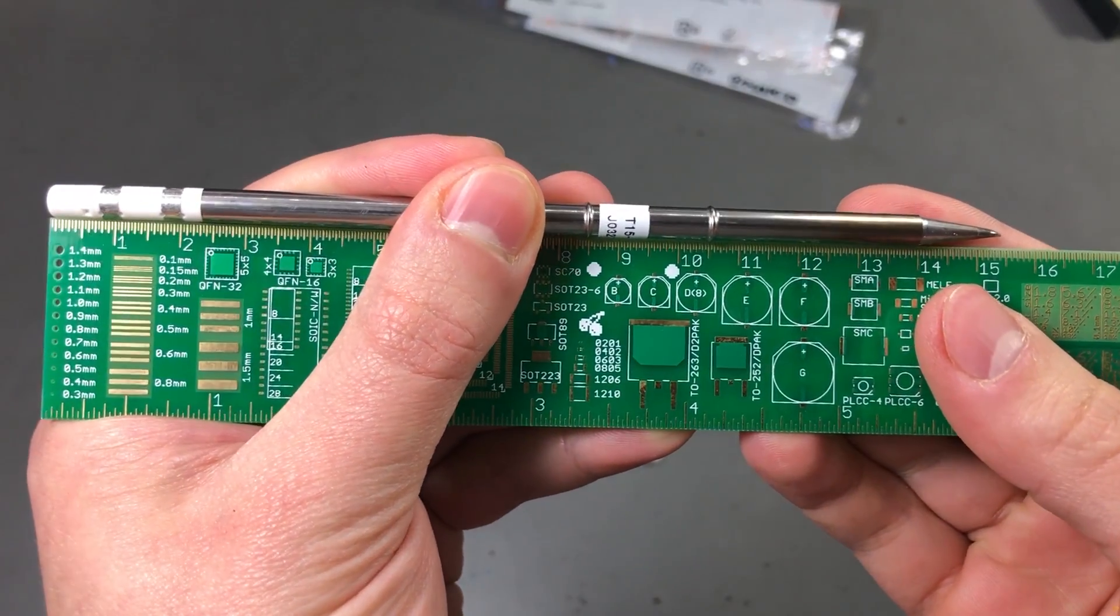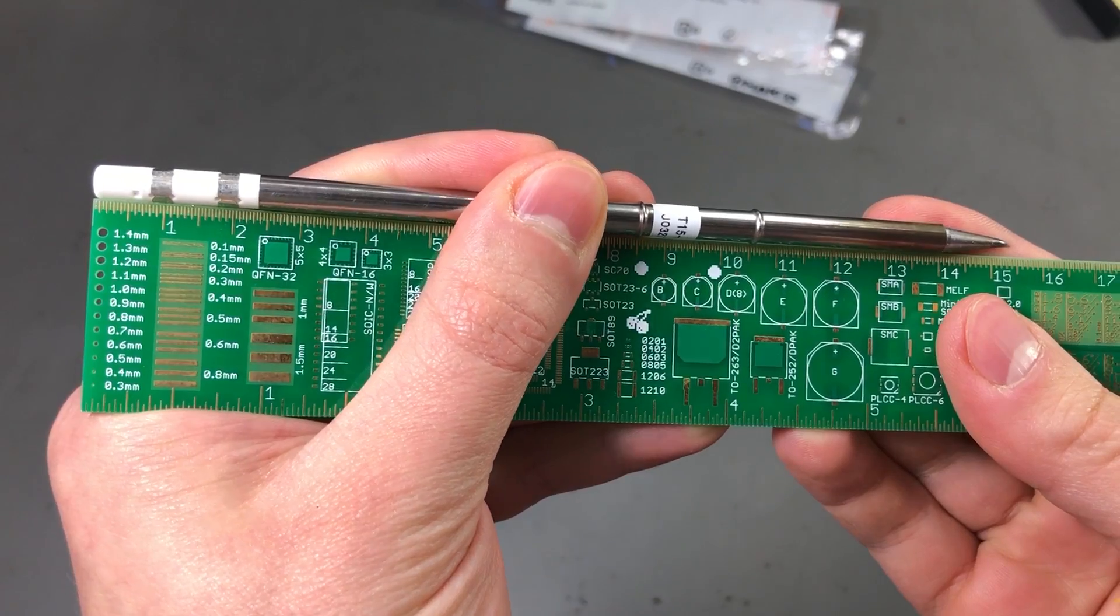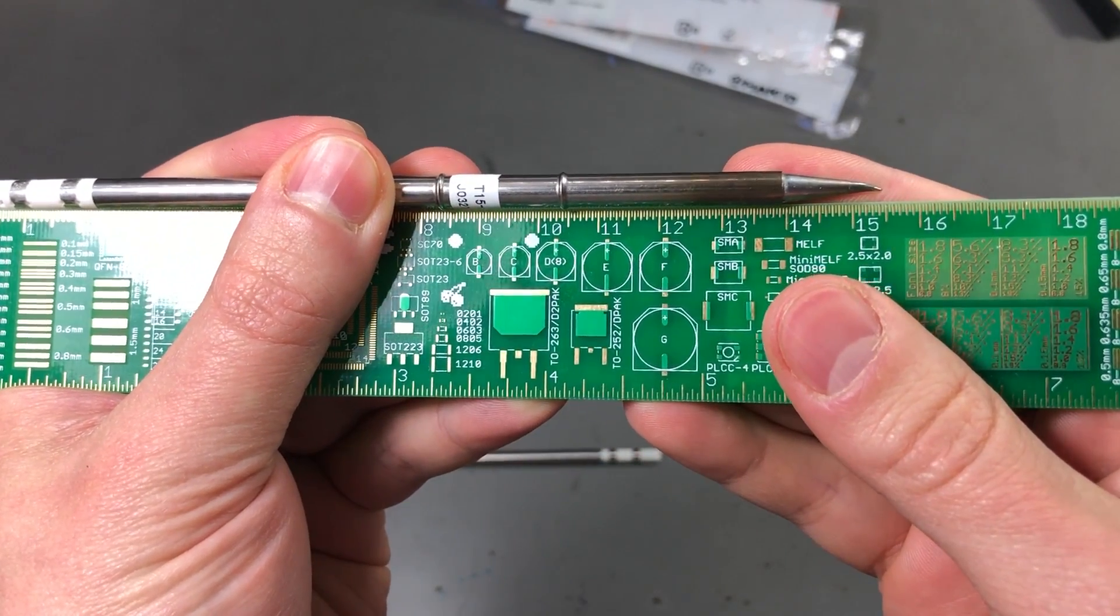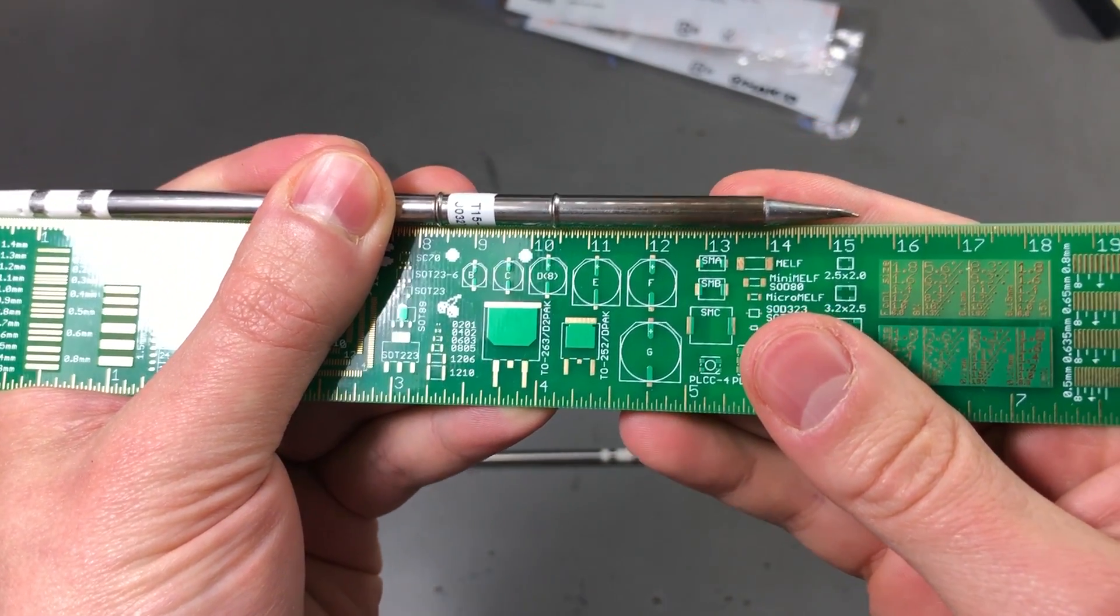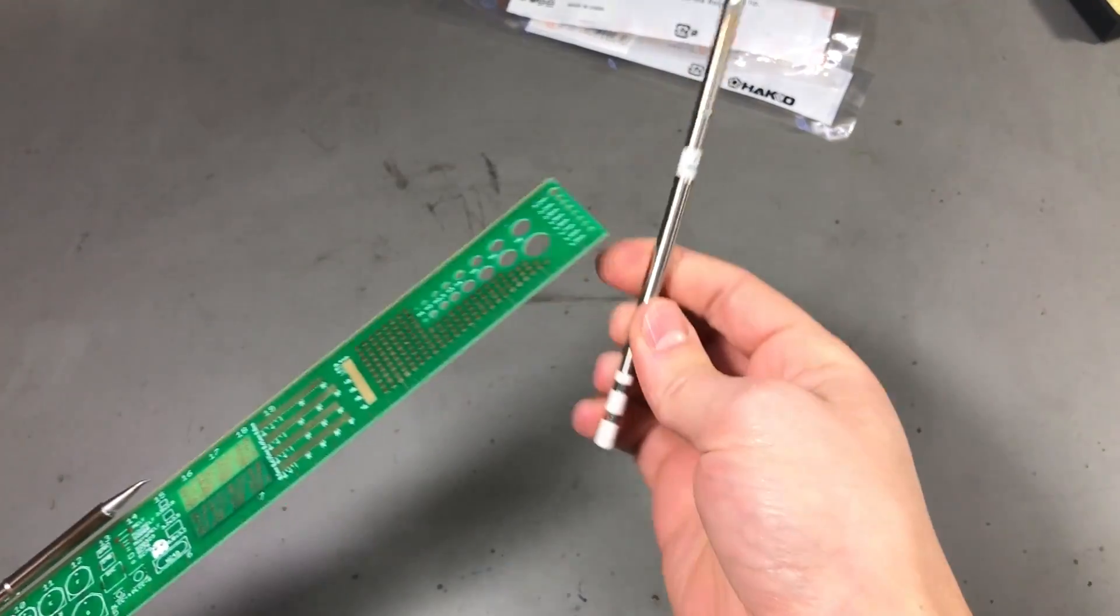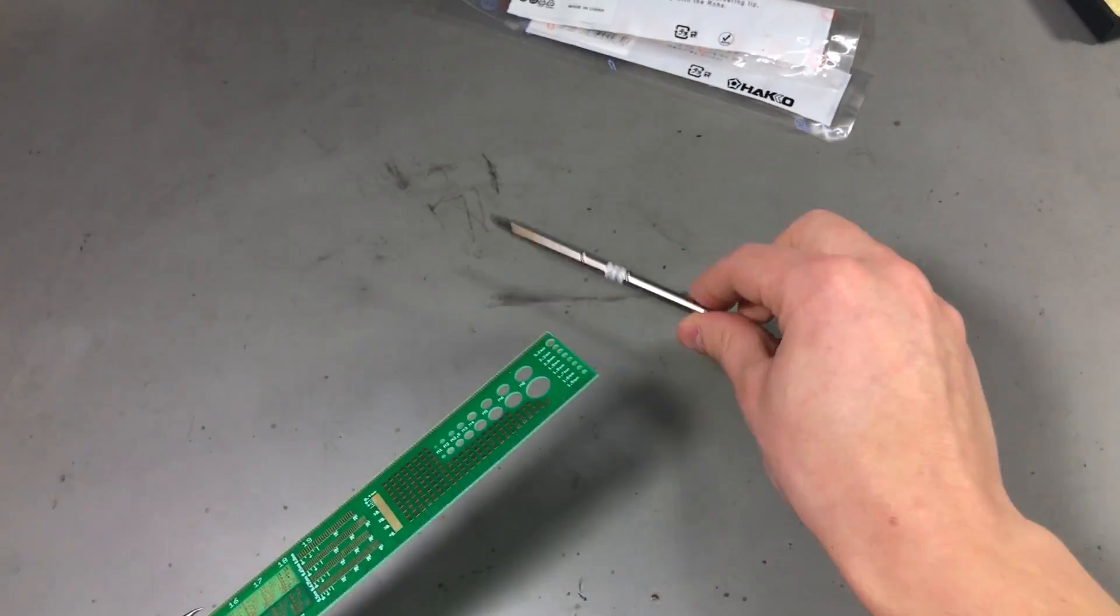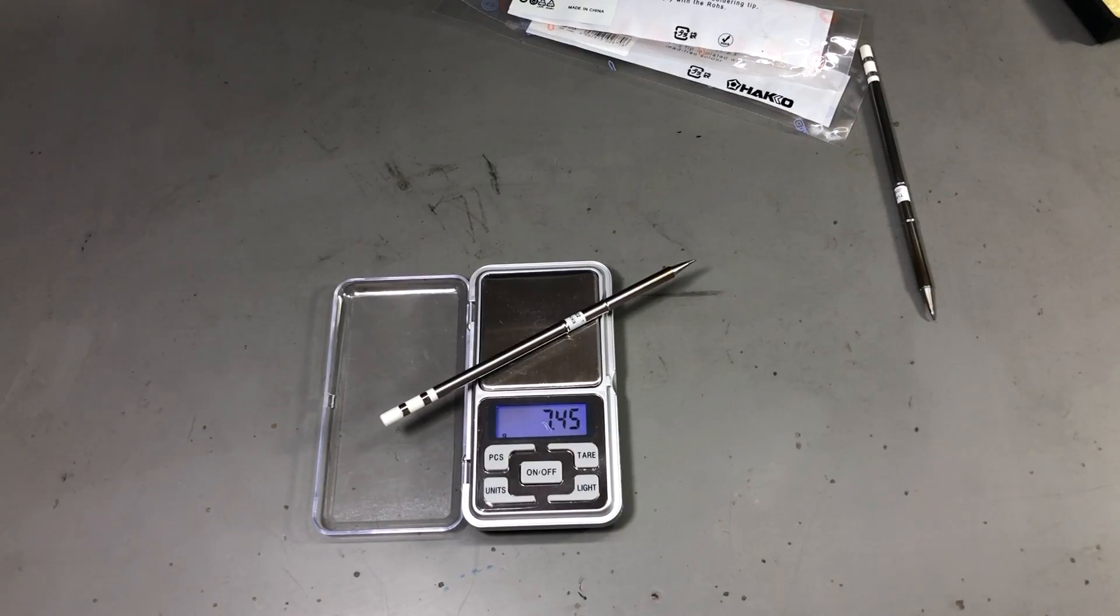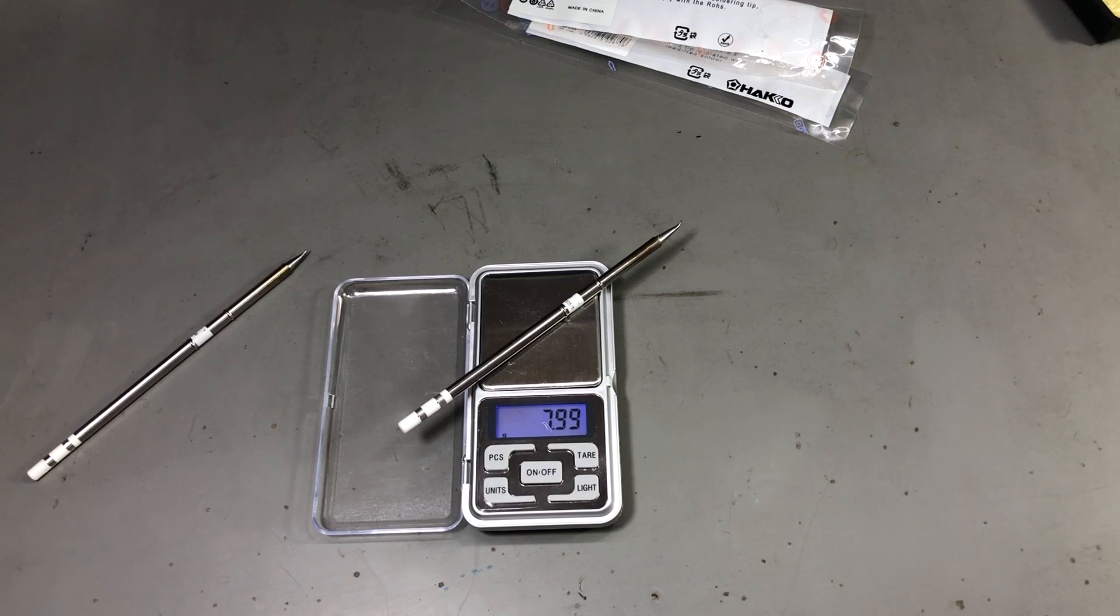And for those interested in the actual length of the genuine tip, it's about 15.5mm and the fake one is just 3mm shorter. Let's also check the weight. This is the T12 tip from AliExpress, it's 7.45 grams and this is the Hakko genuine tip, it's almost 8 grams so the fake tip is half a gram lighter.